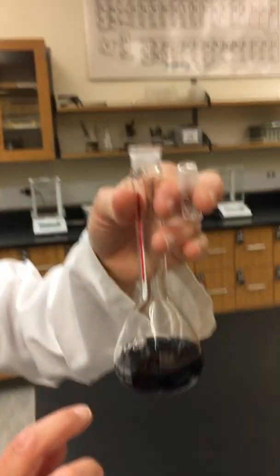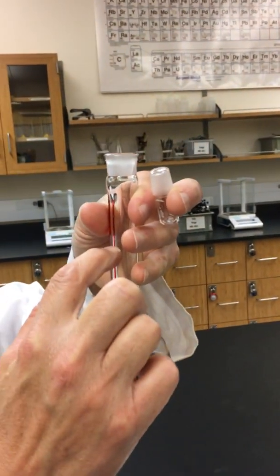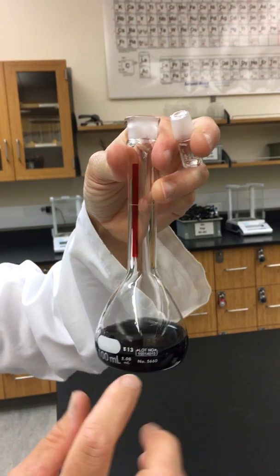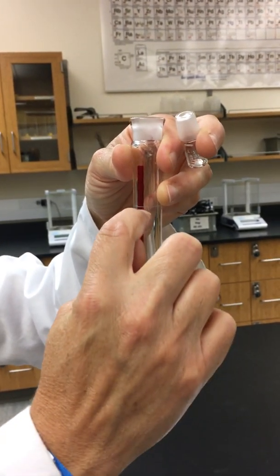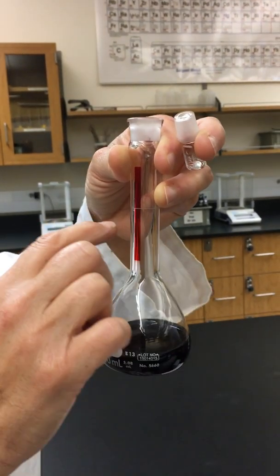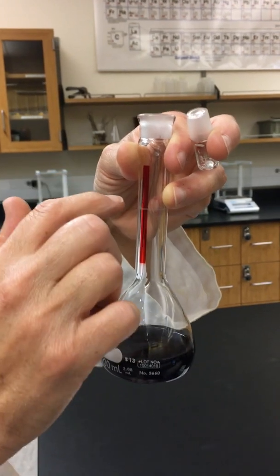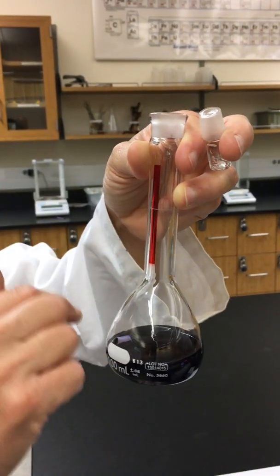So now what we need to do is we want to bring up our total volume to 100 milliliters. So what we're going to do now is add water to bring it up to this line, so that way I've made 100.00 milliliters of my Kool-Aid mixture.